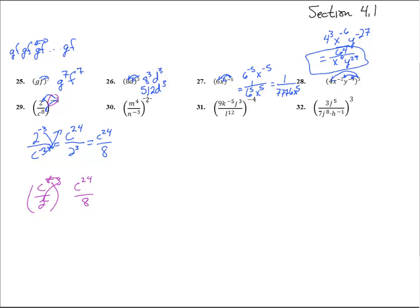Number 30. This 2 is going here and this 2 is going there. So we get m to the 8th over n to the negative 6. Negative exponents carry it up to the top. So we get m to the 8th, n to the 6th.